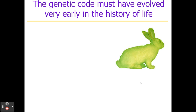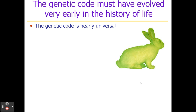Scientists realized that the genetic code must have evolved very early in the history of life. Why? Because it is nearly universal — meaning a bacterial ribosome could read the messenger RNA of a human and make the protein, given all the necessary ingredients. Or a human cell could take a bacterial messenger RNA, read it, and make the bacterial protein. In order for that to happen, this genetic code had to evolve very early and been passed down through all the various iterations of cell replication and mutations.